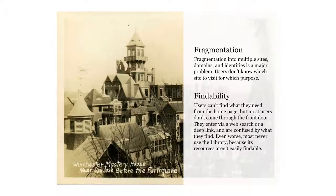I wrote up a brutally honest report, comparing the Library of Congress's web presence to the Winchester Mystery House — a well-known California mansion in the San Jose area. The widow who lived there had been told by a psychic that when the house was complete, she would die. So she kept adding room after room for 38 years, resulting in hundreds of rooms, staircases, doorways, and windows with no blueprint. When you visit, it's not unattractive, but it's a findability nightmare — very easy to get lost. I argued this was the perfect metaphor for the Library's web presence.